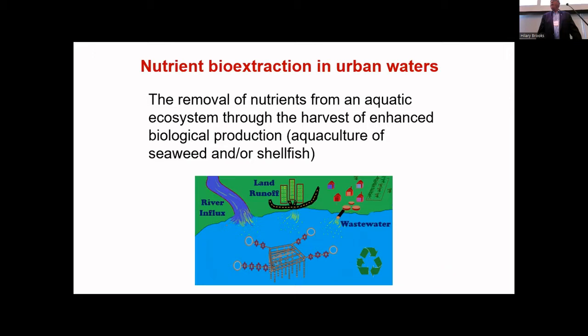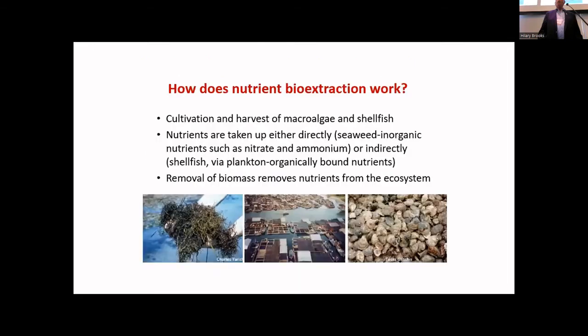Nutrient bioextraction was really an option related to something I've been involved in at the global scale called integrated multi-trophic aquaculture. As we expand fish aquaculture, fish produce liquid waste and fecal waste. We did experiments in the Gulf of Maine where we moved seaweed farms near fish farms, and developed a process where we can site fish farms with seaweed farms as well as shellfish farms. Seaweeds take up inorganic nutrients; shellfish take up organically bound nutrients.